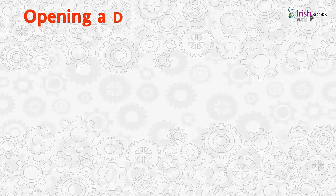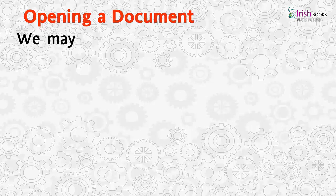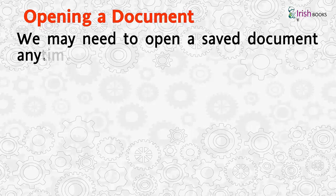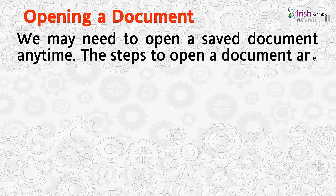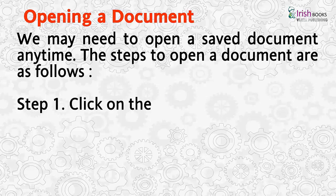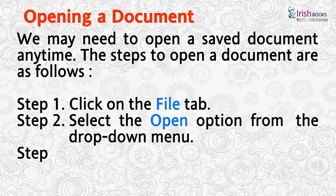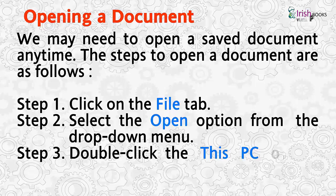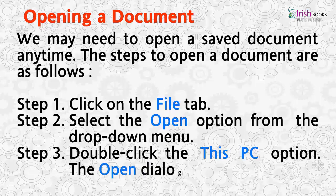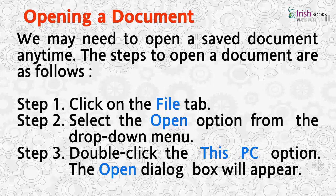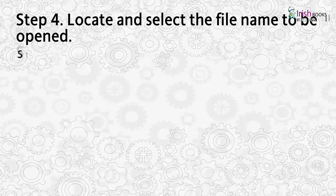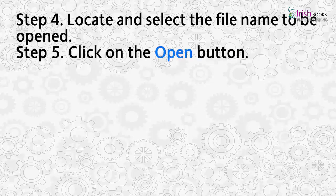Opening a Document: We may need to open a saved document anytime. The steps to open a document are as follows. Step 1, click on the File tab. Step 2, select the Open option from the drop-down menu. Step 3, double-click the option This PC. The Open dialog box will appear. Step 4, locate and select the file name to be opened. Step 5, click on the Open button.